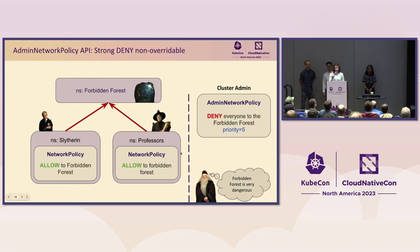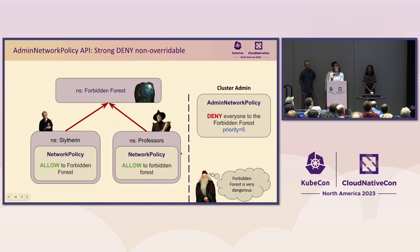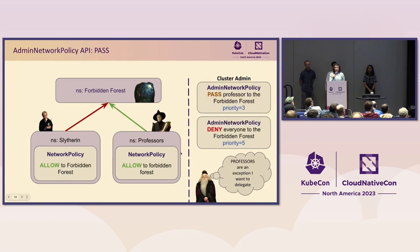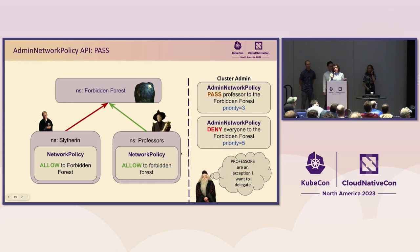Going back to pictures: we have a cluster-wide deny-everyone-to-the-Forbidden-Forest policy. No one can talk to the Forbidden Forest even though they have their own allow network policies in the namespaces. But at some point, professors decide they actually do want to go to the Forbidden Forest — maybe they need to feed the giant spider. They go to Dumbledore and say they want to decide by themselves. Dumbledore thinks professors should be an exception to this strong deny rule — he wants to delegate this decision to them.